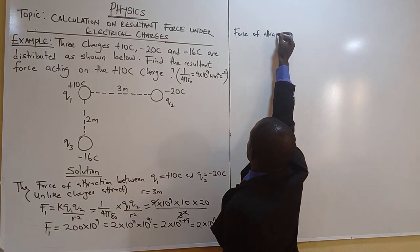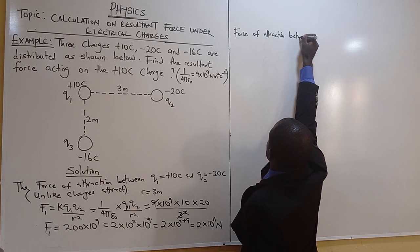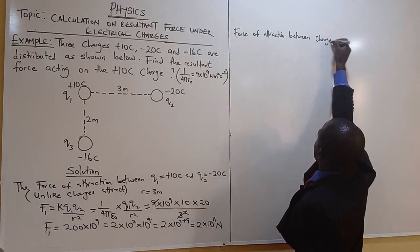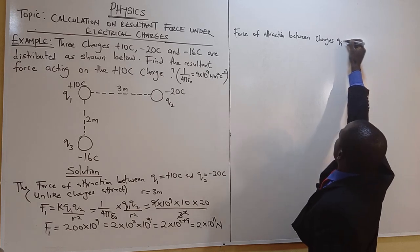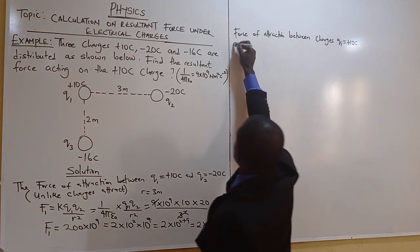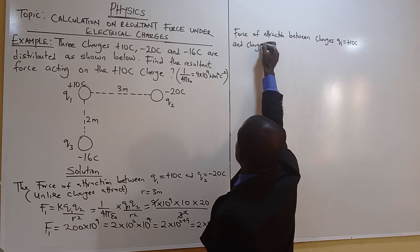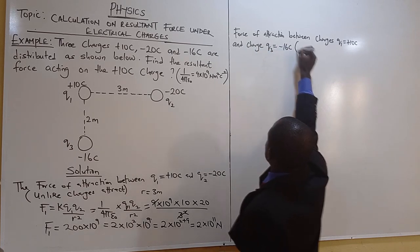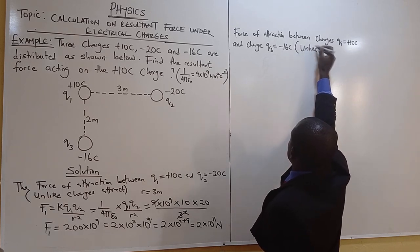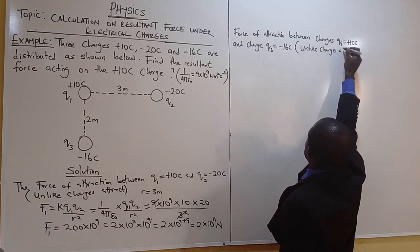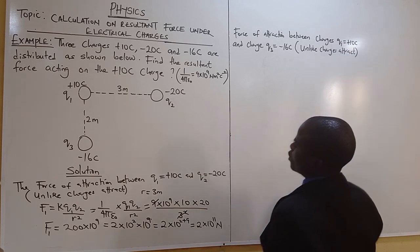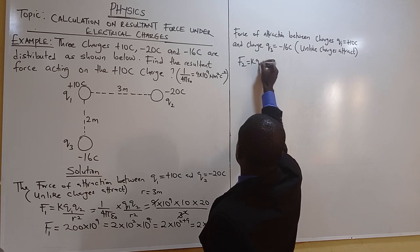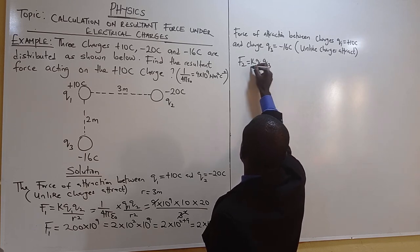Now the force of attraction between charge q1 equals plus 10 coulombs and charge q3 equals minus 16 coulombs — these are unlike charges, so they attract. Let's call that force F2, where F2 equals k times q1 times q3 over r squared.